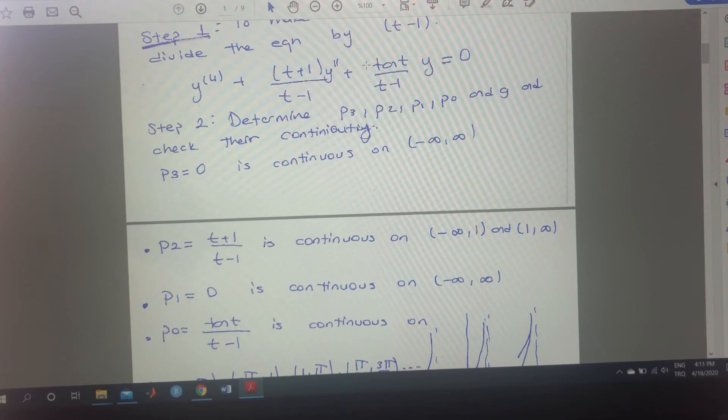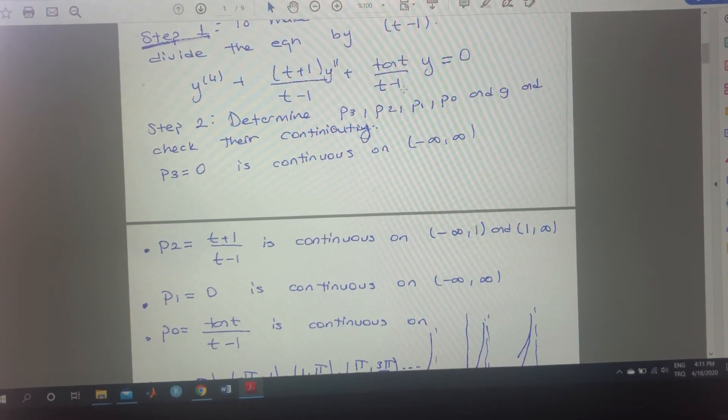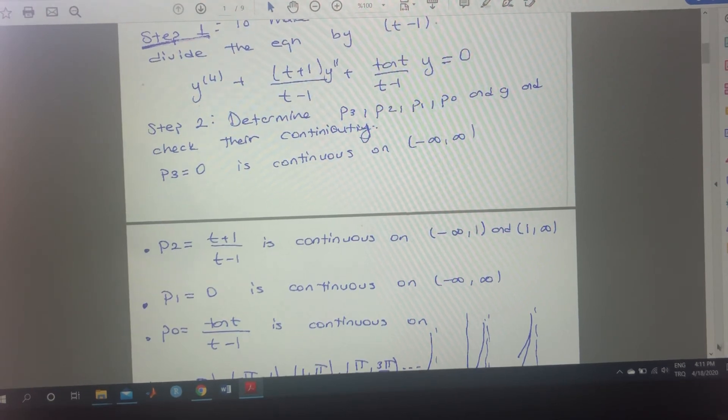p1, again, the first derivative term. Since there is no term first derivative, that's why it's 0. It's continuous everywhere. And p0, the coefficient is tangent t over t minus 1. And this one is continuous.